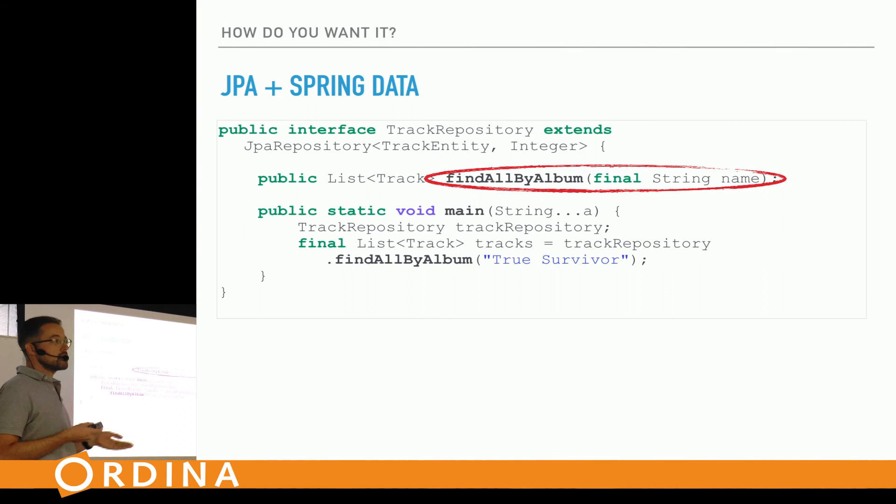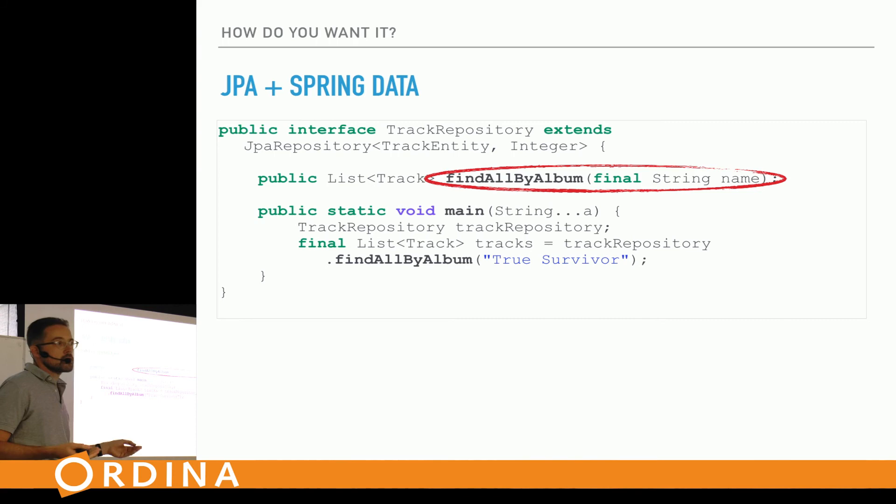With Spring Data, I just declare a method — findAllTracksByAlbum — and call it. This is really easy and the code I like to see in a well-designed application. But then stuff happens.